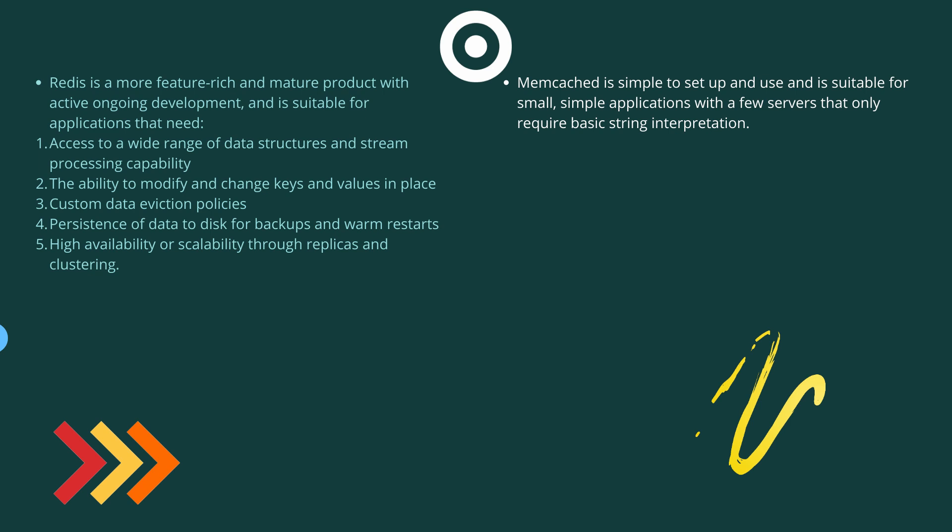To summarize when to use what: Memcache is simple to set up and use and is suitable for small and simple applications with a few servers that only require basic string caching. However, since Redis is a more feature-rich and mature product with active ongoing development, it is more suitable for applications that need access to a wide range of data structures and stream processing capability, or where you need the ability to modify keys and values in place, or need custom data eviction policies, persistence to disk for backups and warm restarts, or high availability and scalability through replication and clustering.